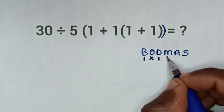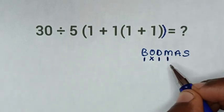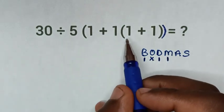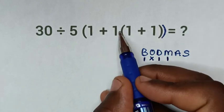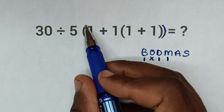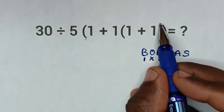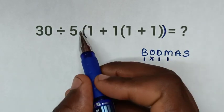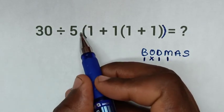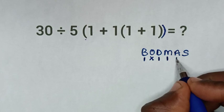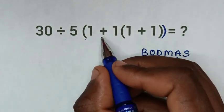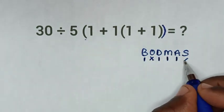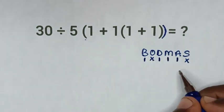M is Multiplication — we have multiplication after we have dealt with this outer bracket. A is Addition — we have addition here. S is Subtraction — we don't have subtraction.